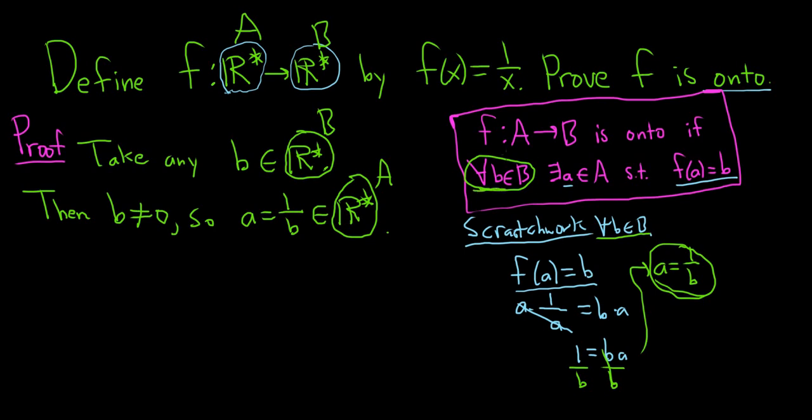So this is your b, this is your a. So we took a little b in capital B. We showed the existence of little a in capital A. So now we just have to verify that this equation holds.